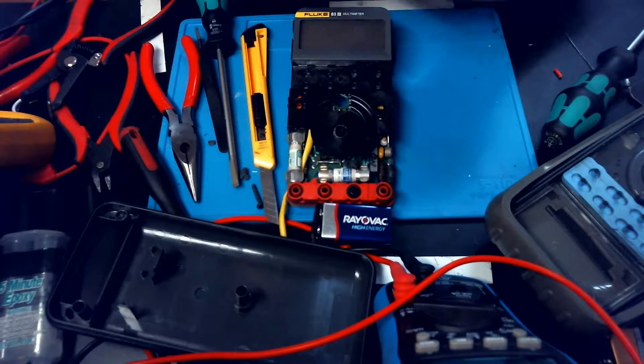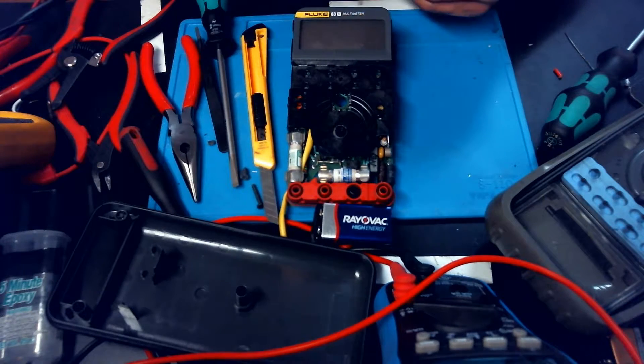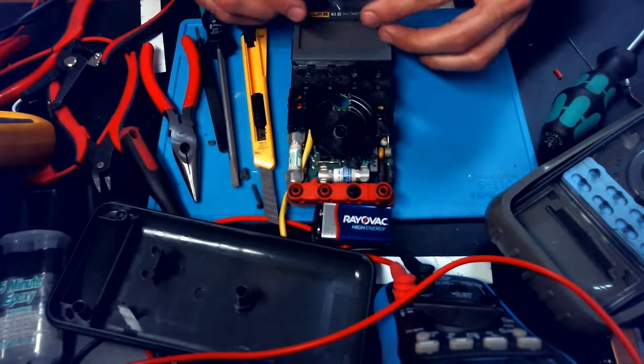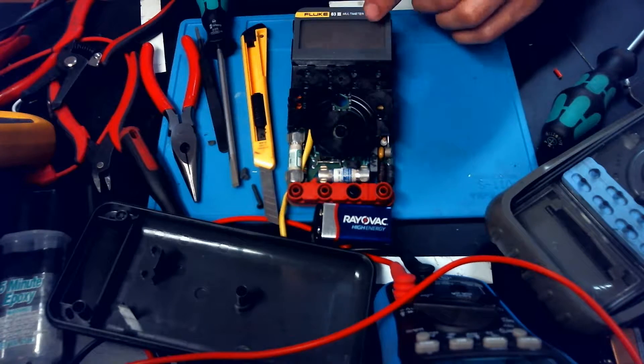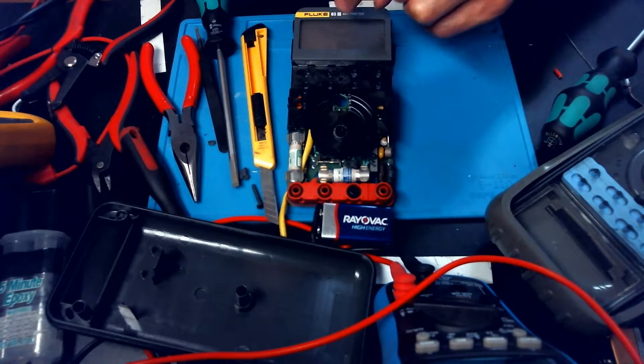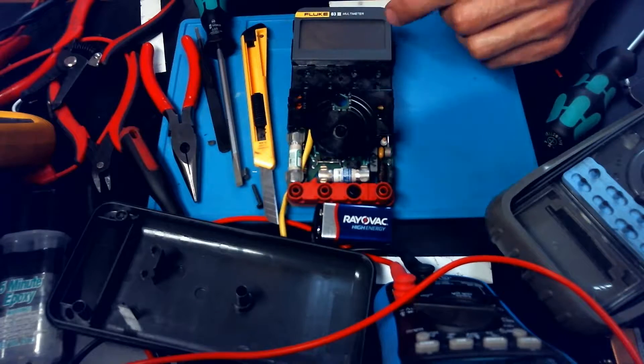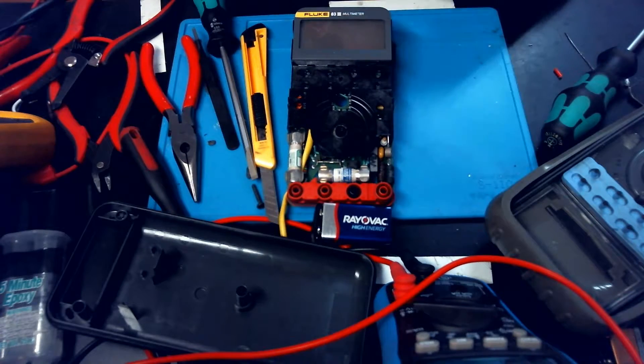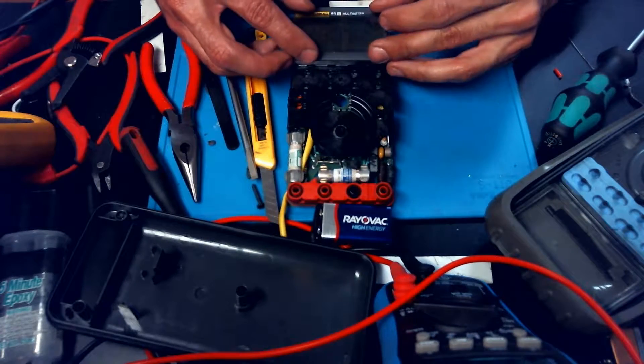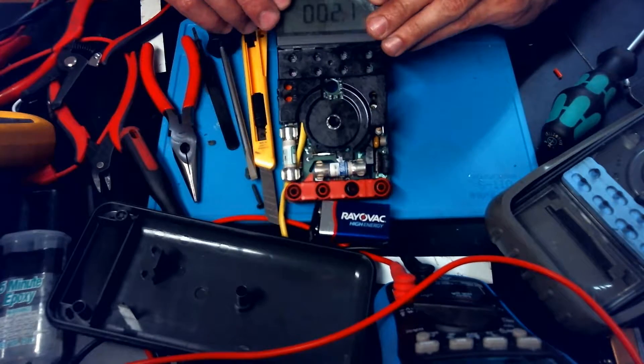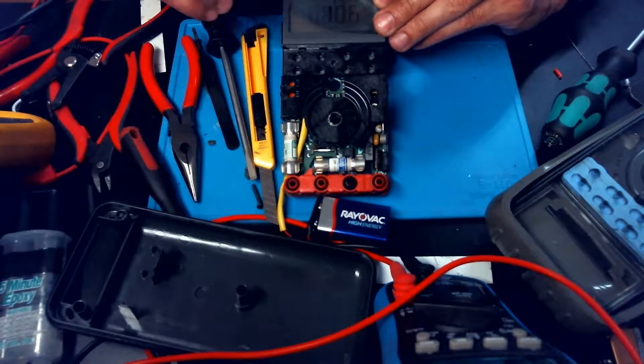Just to kind of illustrate why you need this polarizing film on this meter, I want to show you real quick the difference. The meter is actually on and it is actually displaying numbers, but I can't see it. The camera can't see it. But if we put this polarizing film on there, there it is, perfectly displayed.